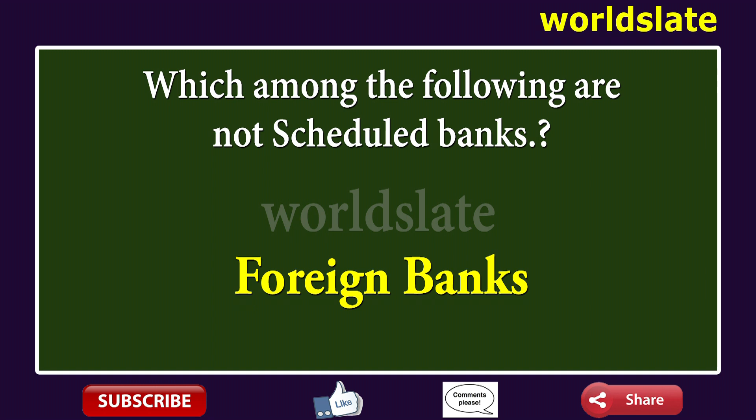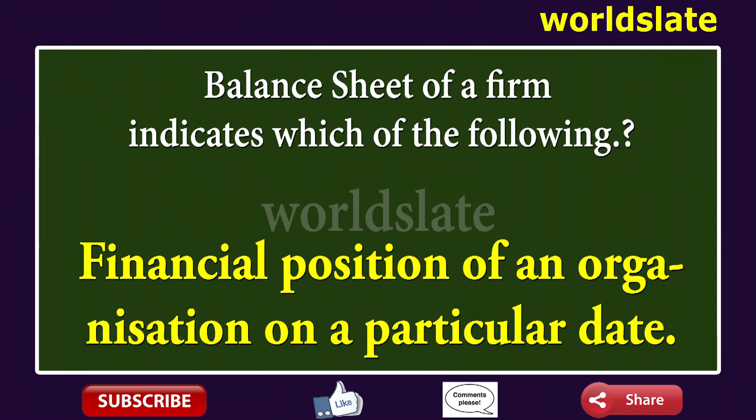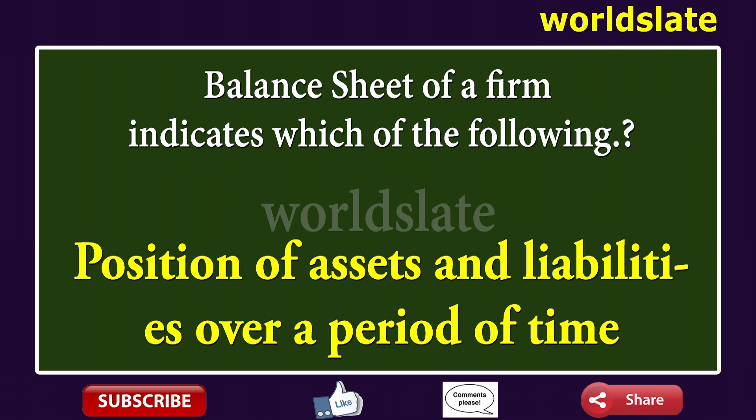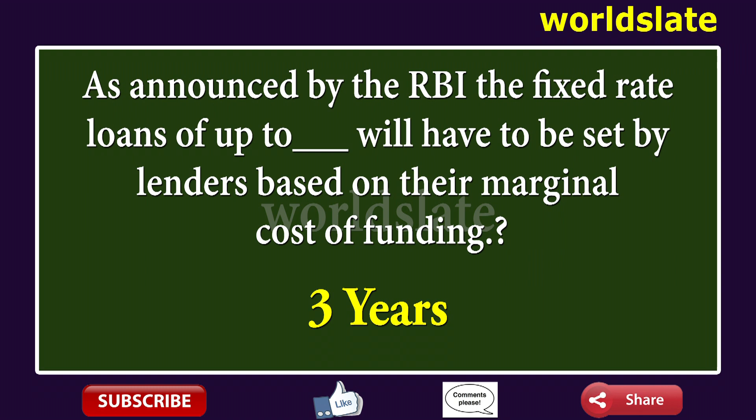Question: Balance sheet of a firm indicates which of the following? Answer: Financial position of an organization on a particular date; Position of assets and liabilities over a period of time.